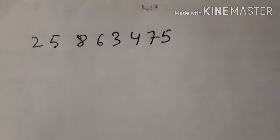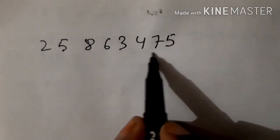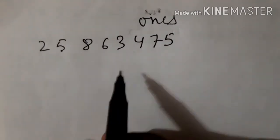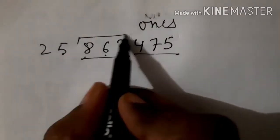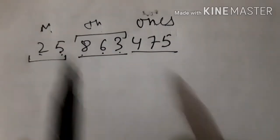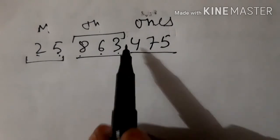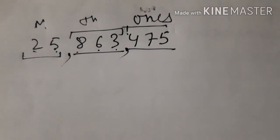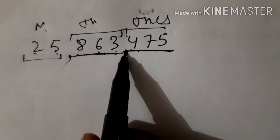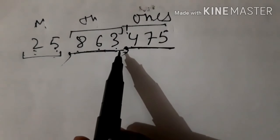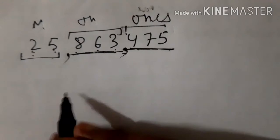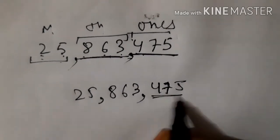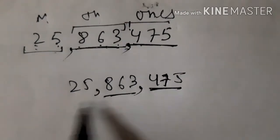देखिए — Ones, Tens, Hundreds यह Ones period है। Thousands, Ten Thousands, Hundred Thousands यह Thousands period है। Million, Ten Million यह Million period है। मैंने क्या किया — number A को उसके places के according periods में separate कर लिया, और जहां separate किया वहाँ comma put कर दिया। हम comma वहाँ put करते हैं जहाँ एक period finish होता है और दूसरा start होता है — periods को commas से separate करते हैं।